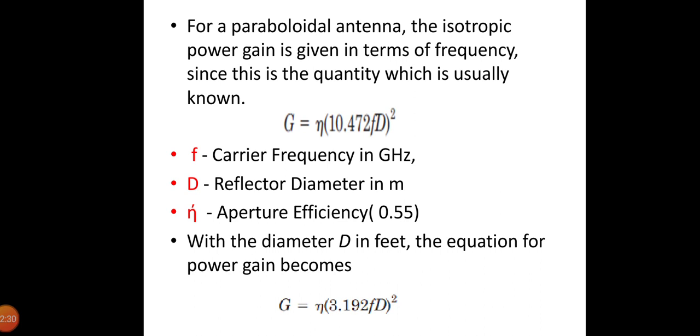For a paraboloid antenna, the isotropic power gain is given in terms of frequency since this is the quantity which is usually known. G equals η times 10.472 times (fd)², where f is the carrier frequency in gigahertz, d is the reflector diameter in meters, and η is the aperture efficiency. With the diameter in feet, the equation can be written as G equals η times 3.192 times (fd)².